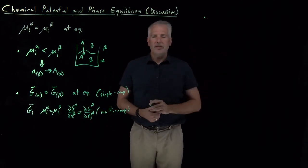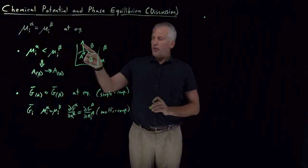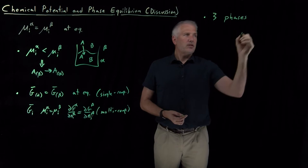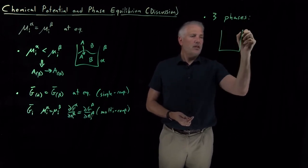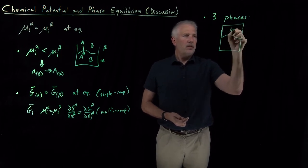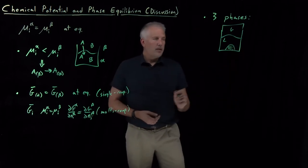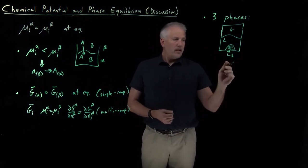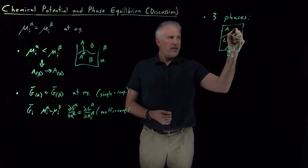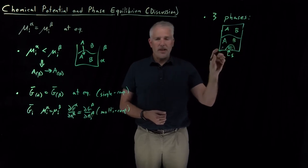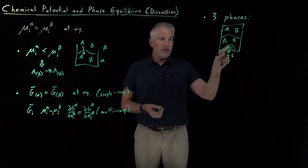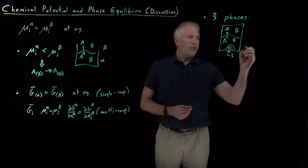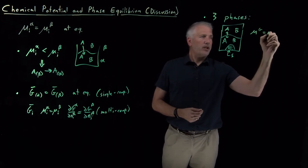Another important thing to consider is that so far we've only talked about two phases at a time. What if we have a system with three phases in coexistence — say a liquid, a gas, and a solid phase? This could be some A's and some B's in the gas phase, some A's and B's in the liquid phase, and both A and B in the solid phase — a multi-component system with three different phases coexisting.